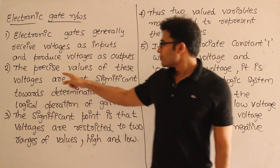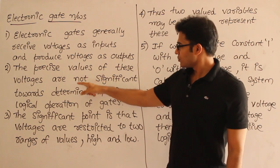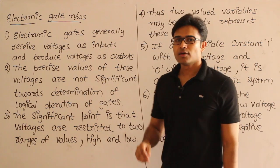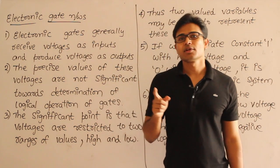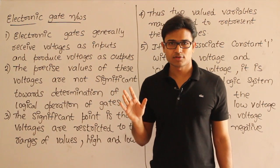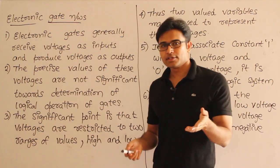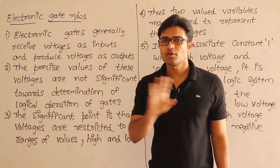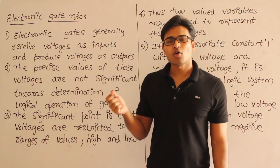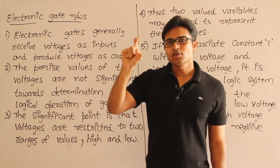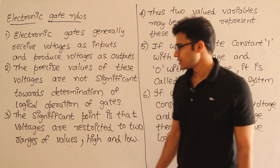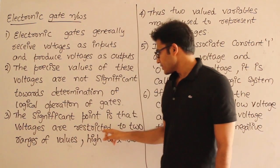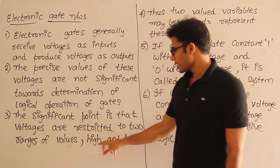The precise values of these voltages are not significant towards the determination of the operation of the gates, which means what voltages you are giving exactly is independent, is irrelevant. Sometimes you will give 10 volts, sometimes 5 volts, sometimes 3 volts. But 10, 5, or 3 is not what we are worrying about. What we really worry about is what is the range of the voltage. The significance is that voltages are restricted to ranges of values: high and low.